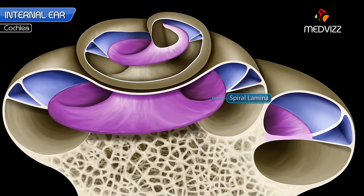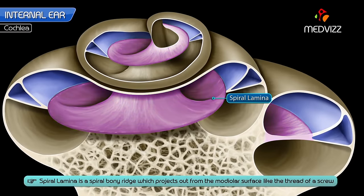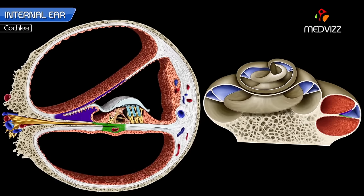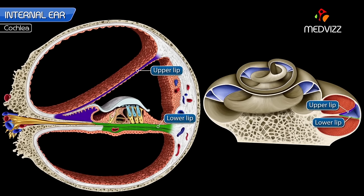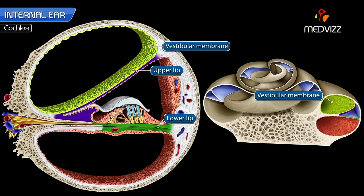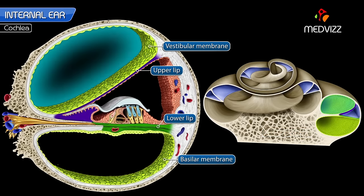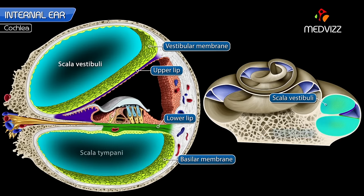The spiral lamina is a spiral bony ridge which projects out from the modiolar surface like the thread of a screw. The free edge of the lamina splits into upper and lower lips. The vestibular membrane extends from the upper lip of the lamina to the outer wall of the cochlea, while the basilar membrane extends from the lower lip to the outer cochlear wall. This divides the cochlear canal into an upper part known as the scala vestibuli and a lower part known as the scala tympani.